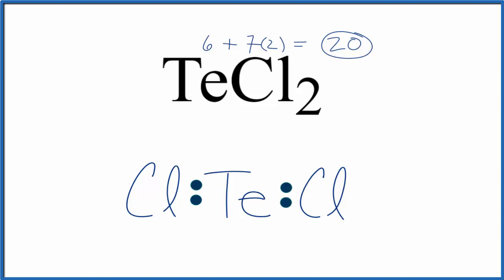Now we'll complete the octets on each of the chlorine atoms. At this point we've used 16, so now we can complete the octet on the Te. There's 18 and 20, and this is the Lewis structure for TeCl2.